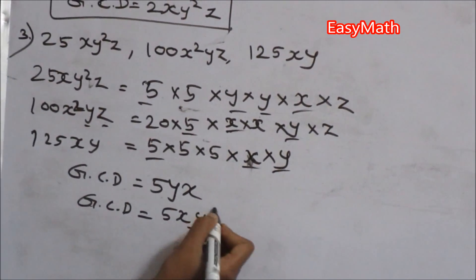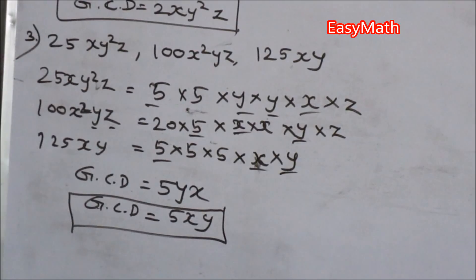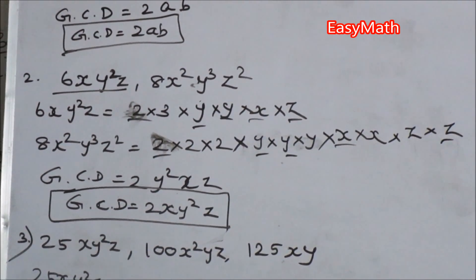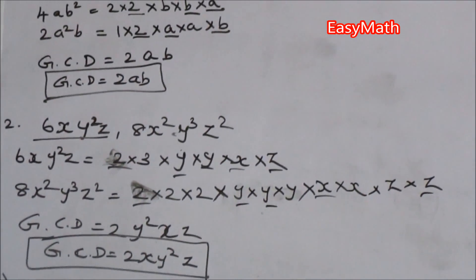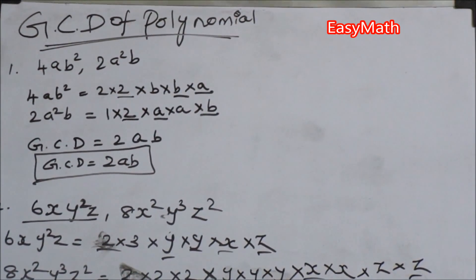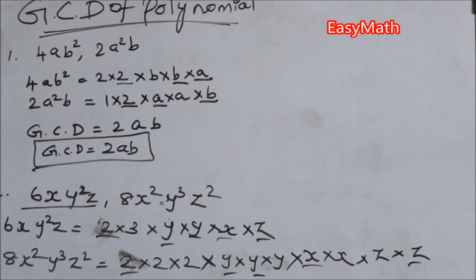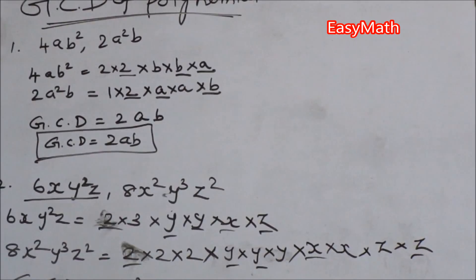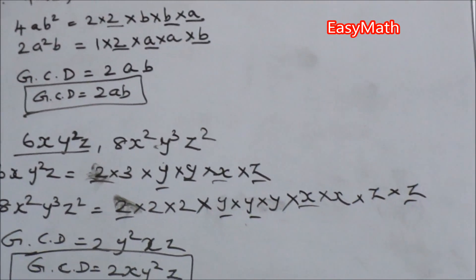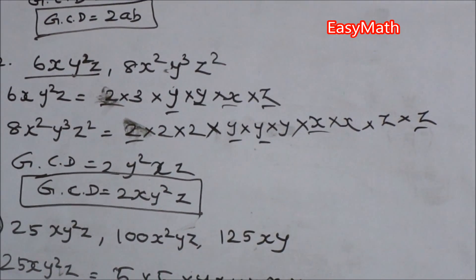So the GCD is 5xy. I hope you are clear with GCD of polynomials. In future classes I will explain LCM — the least common multiple — of polynomials. Stay updated and subscribe to my channel for more videos. Thank you.